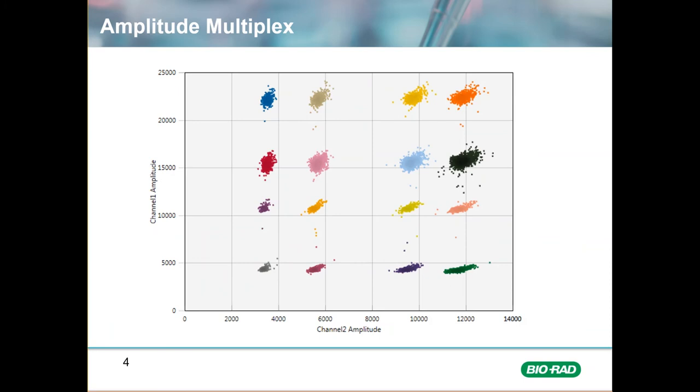Amplitude multiplexing can be created by purchasing two assays in FAM and two assays in hex and then varying the concentration of each assay in order to separate the positive droplets on the clusters in the plot. At the far left bottom corner of the plot is the cluster of droplets that have no target amplicons for all four assays.